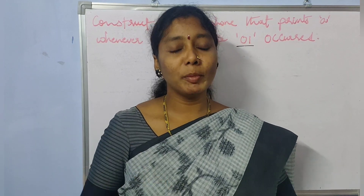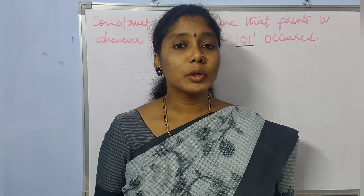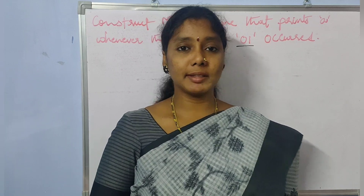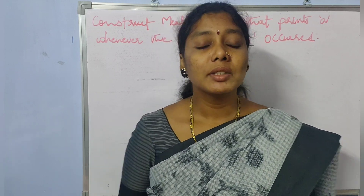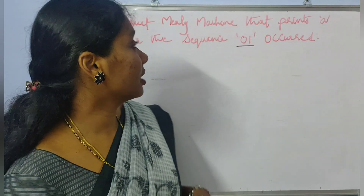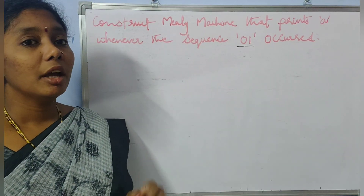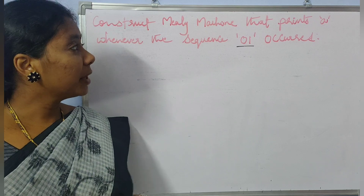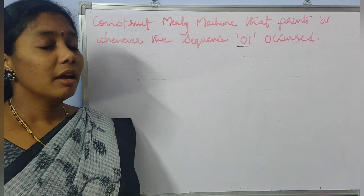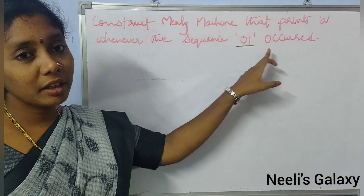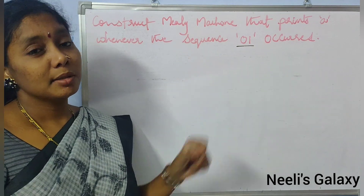Hi all, welcome back to my channel. In this video, I will show you the example of the Mealy machine which prints A whenever the sequence 0-1 occurs.